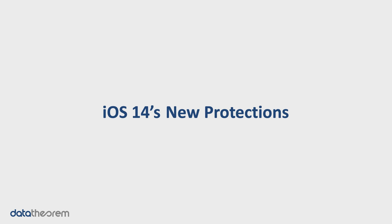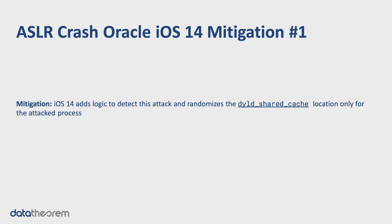That's the attack. iOS 14 introduces several new protections that make this kind of attack a lot less feasible. Firstly, iOS has added special logic specifically to detect this attack. When it sees the attack being carried out, it will re-randomize the shared cache's location only for the process under attack. The rest of the system retains the performance benefits of the shared cache at a standard location, while also making it difficult for an attacker to reveal where the shared cache has been loaded.